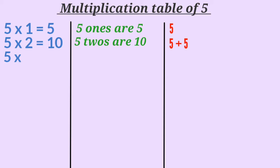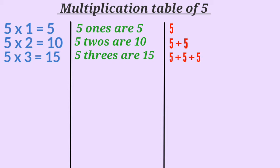5 multiplied by 3 is 15, or 5 threes are 15. Here we are adding number 5 three times. 5 multiplied by 4 is 20, or 5 fours are 20.